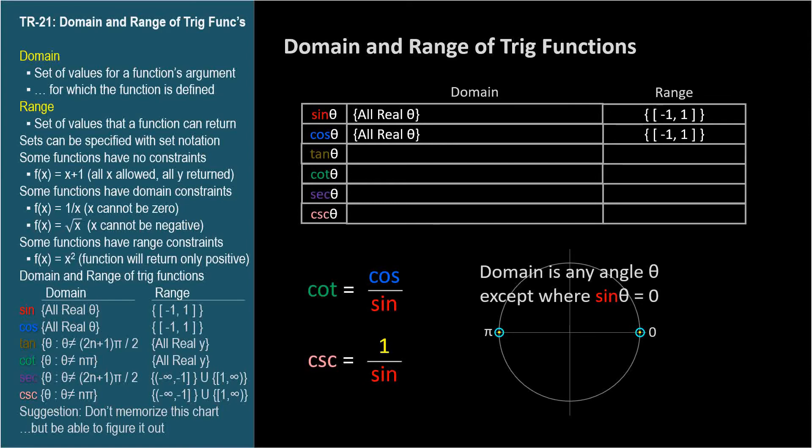Sine is zero at the left and right edge of the circle, at zero and π radians. So these two functions are undefined at every angle coterminal with zero and π radians. That is, theta can be any angle, except a multiple of π radians. nπ is a way to say multiples of π, since we say n can be any integer.